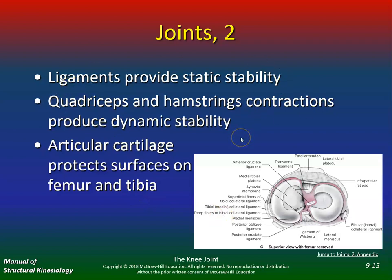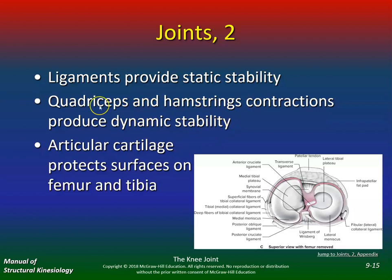Ligaments — knee ligaments are very important. The one you always hear about is the ACL, but ligaments provide static stability. Quadriceps and hamstrings contractions produce dynamic stability. Your muscles — your quads and hamstrings, more so your hamstrings — provide dynamic stability when you're running, jumping, cutting. Your ligaments only provide static stability when you're in a stationary position. So if you have weakness in your quadriceps and hamstrings, mostly hamstrings, that don't give you dynamic stability, you'll tear your ligaments.